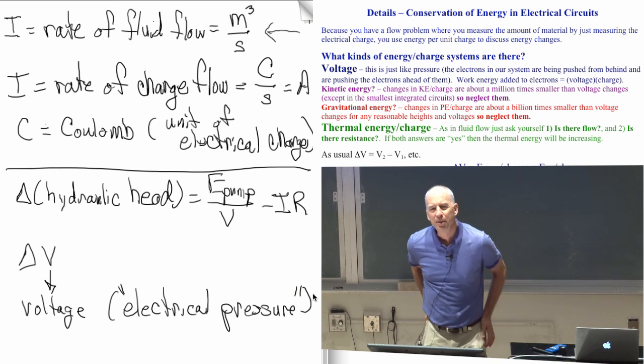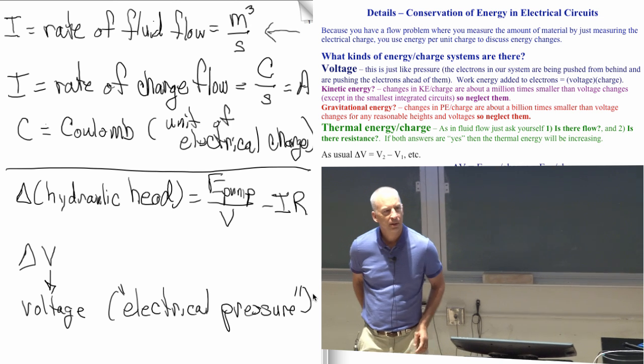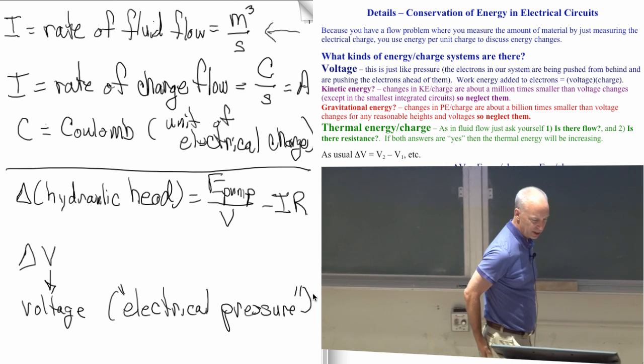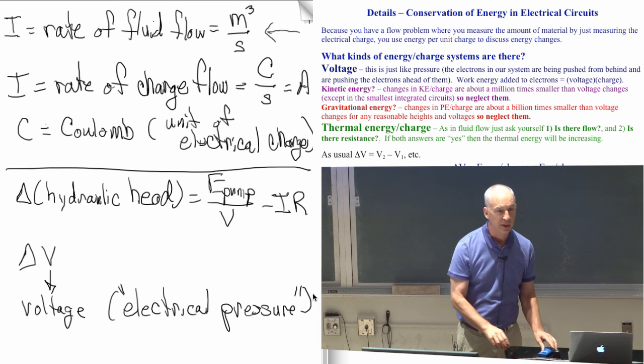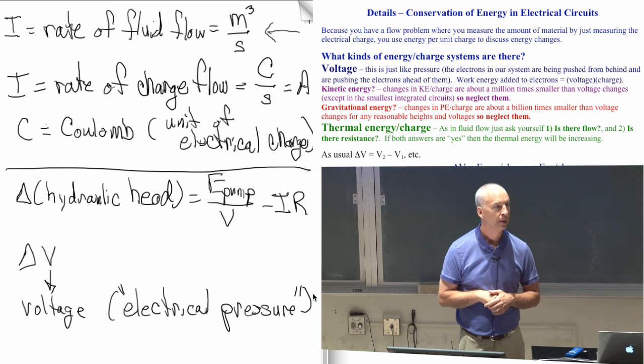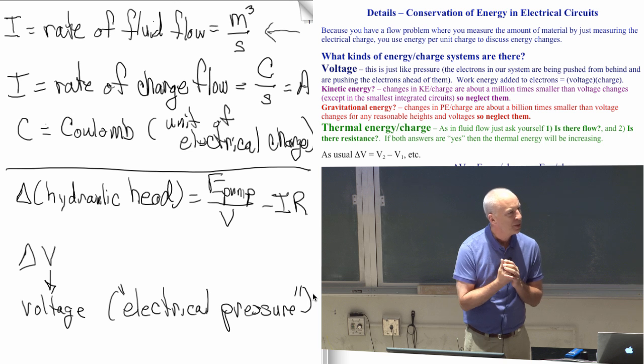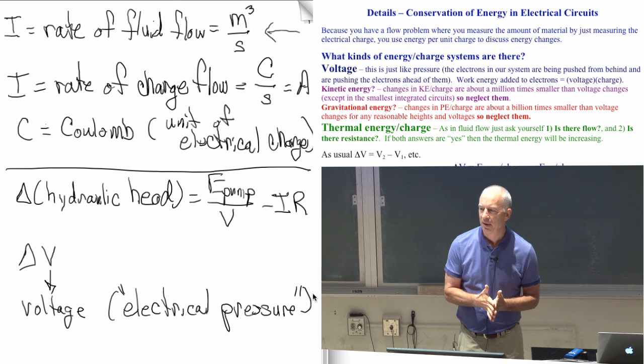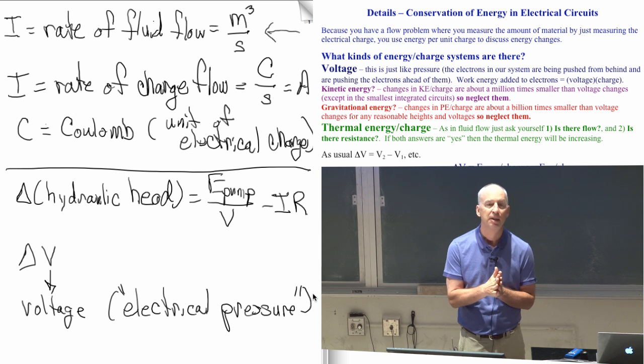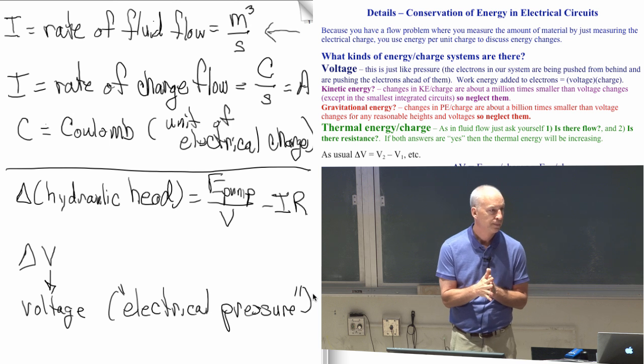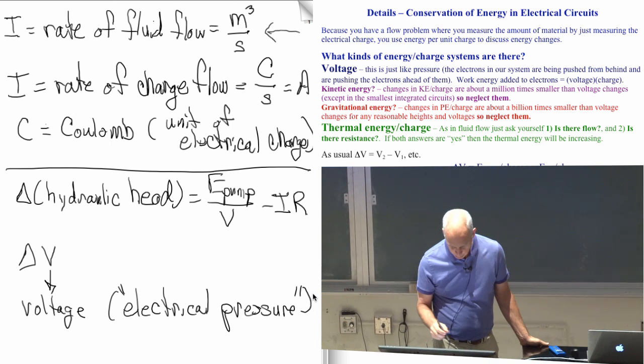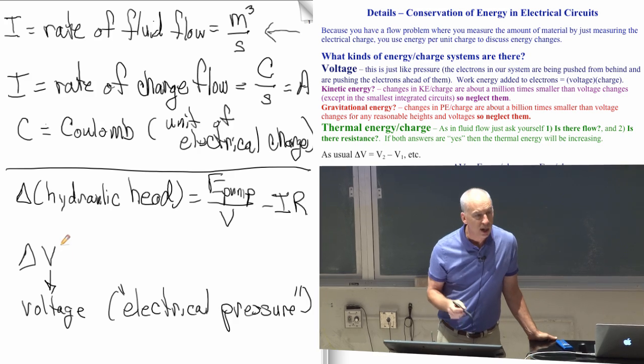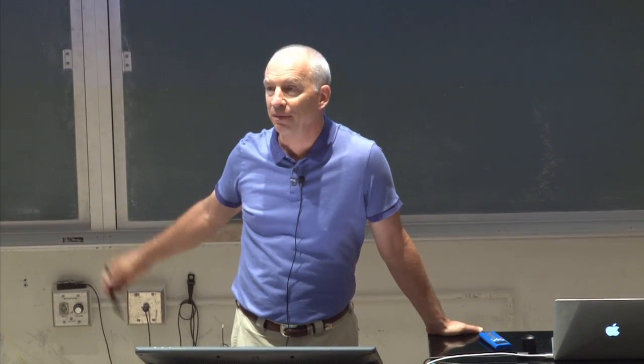It isn't a pressure because the units are wrong. It's energy per unit charge instead of energy per unit volume. Energy per unit volume is pressure. But in electrical circuits, we don't measure the volume to figure out how much stuff is flowing. We measure the electrical charge.